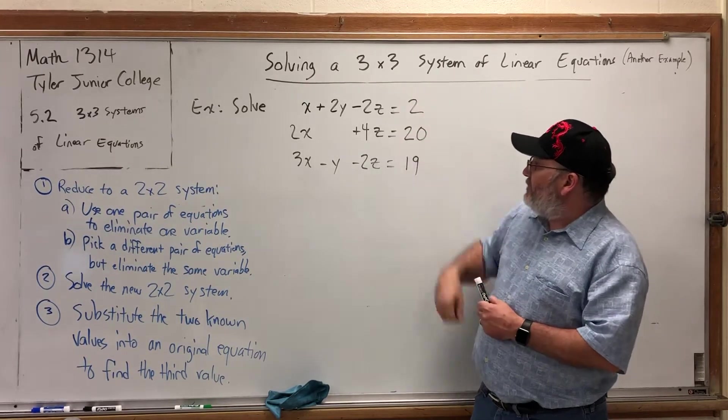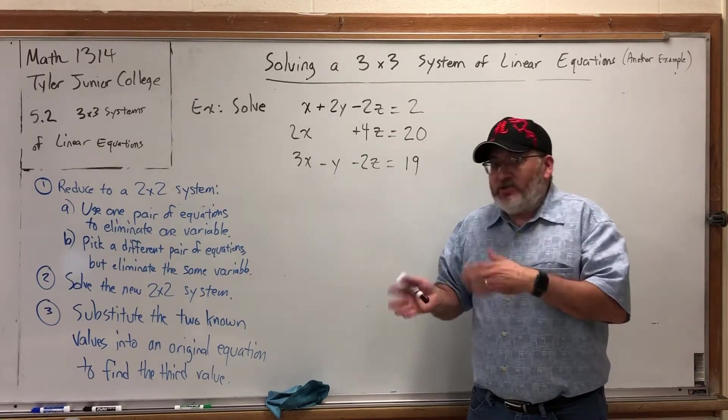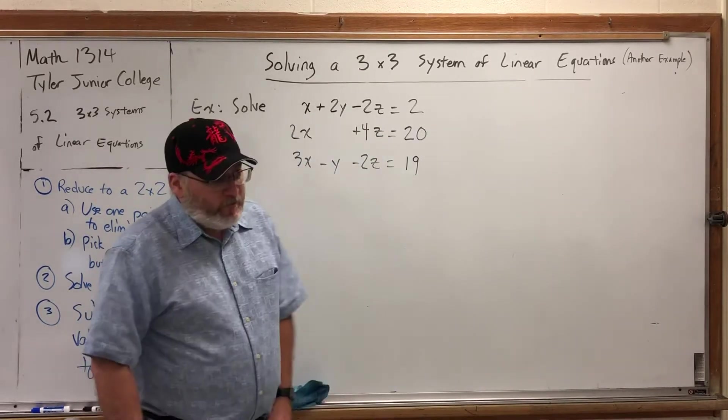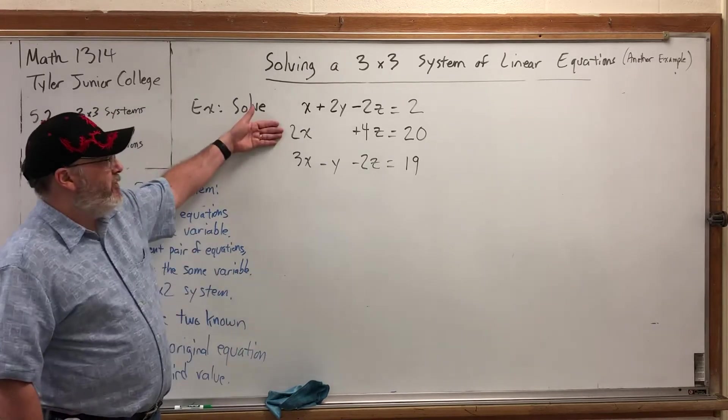I can do the same thing I did before. Choose these two, eliminate the z. Choose these two, eliminate the z and create a 2x2 system that has only x's and y's. But, if I'm going to make a 2x2 system by making an equation with two variables, why not take advantage of one that I already have?